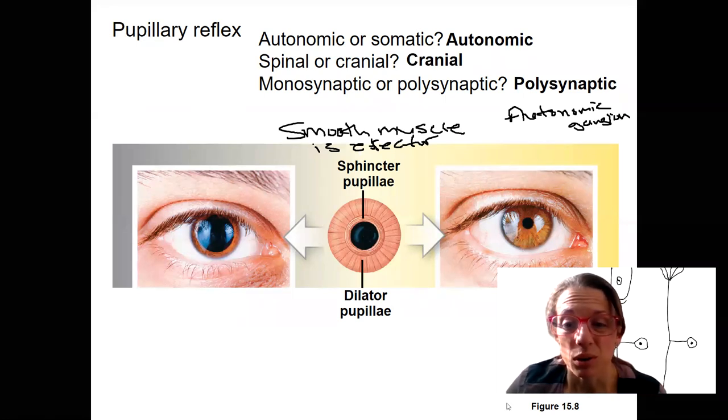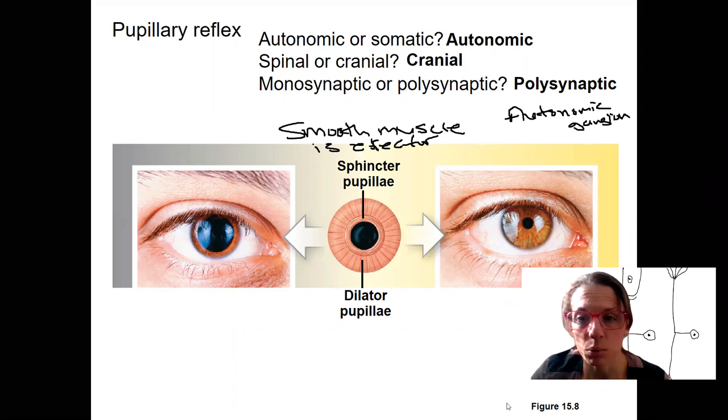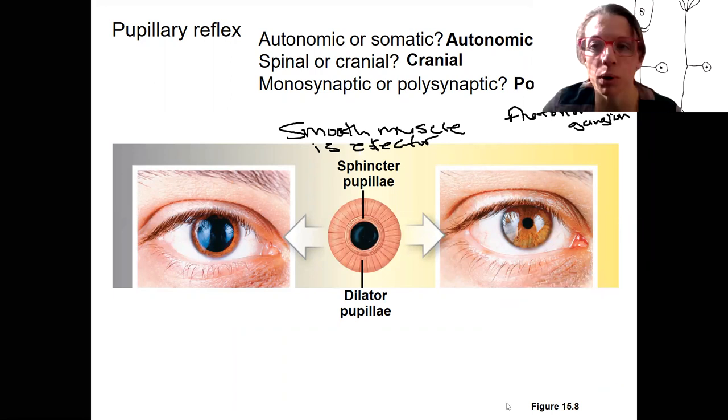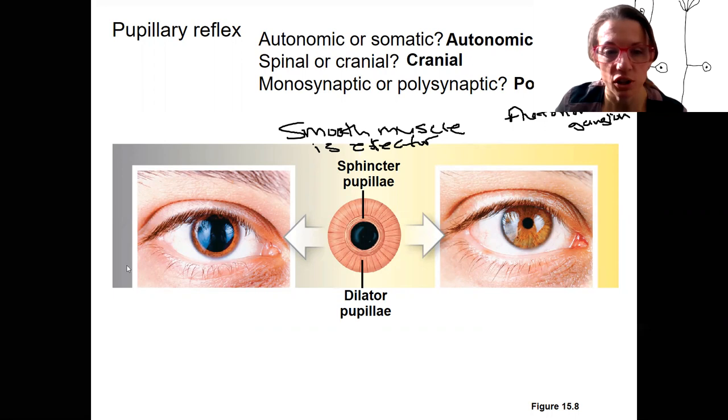Could you now, and actually you already told me, I think we've done this, right? We've talked about what happens to your pupils with sympathetic and parasympathetic activation. Could you predict which is going to happen in which situation here?